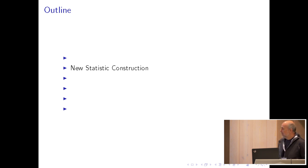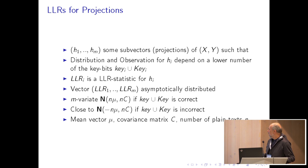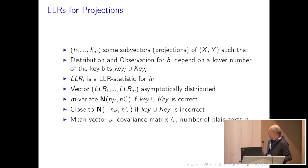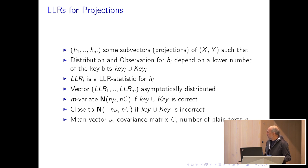Now I explain how this new statistic was constructed. We have our vector X and Y whose distribution we know, and we take some sub-vectors of this vector. We take M sub-vectors, which I call projections — they may be any functions of these bits. These projections are chosen such that the distribution and observation for each of them depend on a low number of key bits. We then construct an LLR statistic for each of these sub-vectors and consider the vector of these LLR statistics.